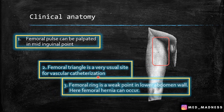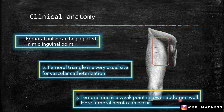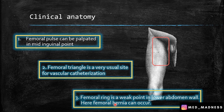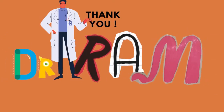Number three: the femoral ring is a very weak point. The femoral ring is the opening of the femoral canal, and this is a very weak point in the lower abdominal wall. Here, femoral hernia can occur — hernia meaning the protrusion of the abdominal contents into the weakest point, for example a small bowel. I hope this session is useful for you. Thank you, see you with more interesting videos.